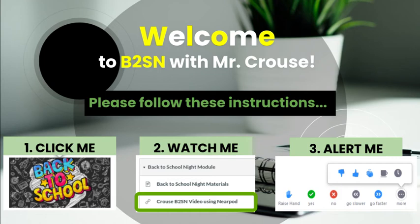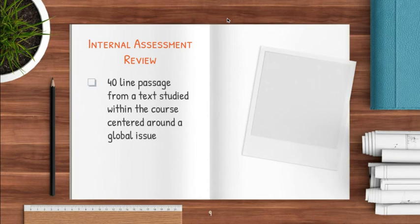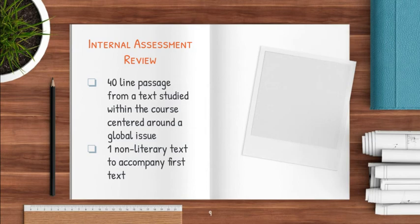That will be up for a while, so if your parents don't get to it right away, it will still be there for them to access it should they ever want it. So let's talk about the internal assessment. For a review of the basics: you will be selecting a 40-line passage from a text studied within the course, centered around a global issue. You'll also be selecting one non-literary text to accompany your literary text and explore that same global issue.